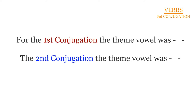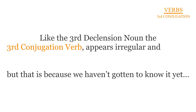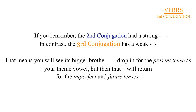We saw that for the first conjugation, the theme vowel was A, while the second conjugation theme vowel was a long E. In contrast, the third conjugation verb, like the third declension noun, appears irregular and just weird — but that is just because we haven't gotten to know it yet. The second conjugation had a strong E; in contrast, the third conjugation has a weak E. That means you will see its big brother I drop in for the present tense as your theme vowel. We call this a vowel raising. But then that short E will return for the imperfect and future tenses.